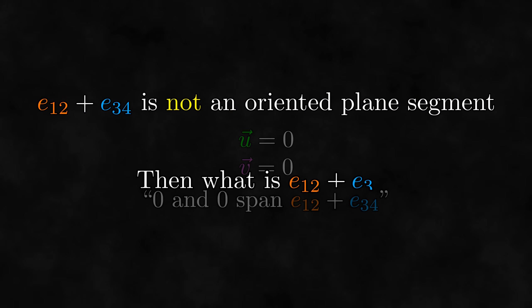But then what is E12 plus E34? Aren't bivectors oriented plane segments? Is E12 plus E34 not a bivector? Or maybe it's just impossible to add them?